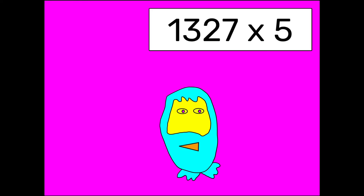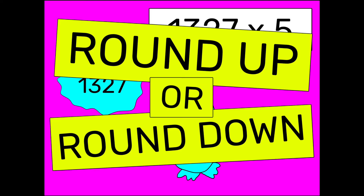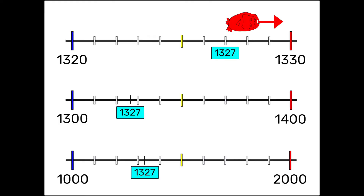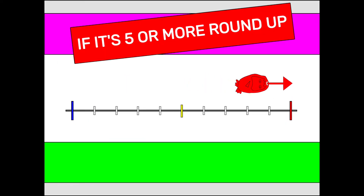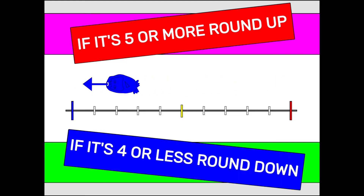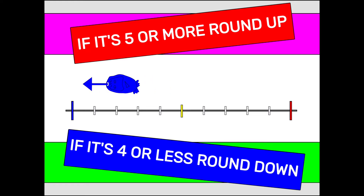When you approximate calculations, when you estimate calculations, make those numbers easier to remember. Round up or round down to the nearest thousand, hundred, ten. If it's five or more, round up. If it's four or less, round down.